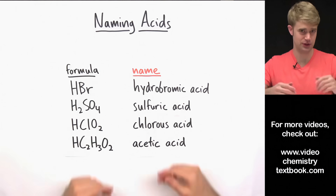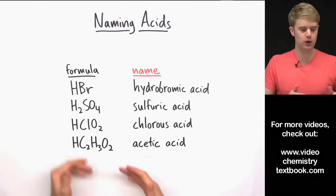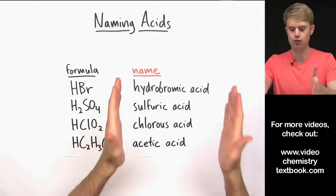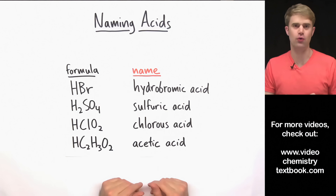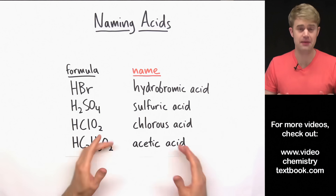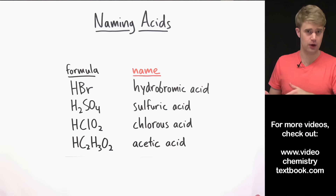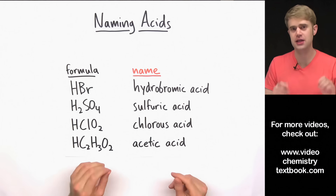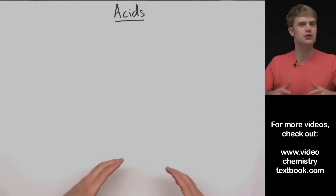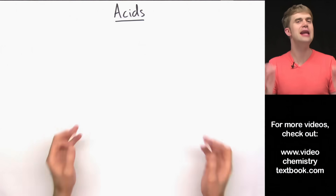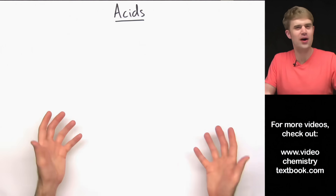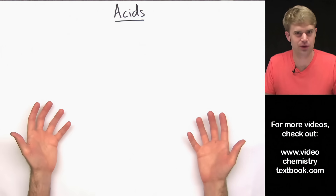Let's talk about naming acids. We'll learn how to look at the chemical formula for an acid and write a name for it. This video is going to be an introduction to the topic, and then the next video is going to be a lot of example problems so you can get some practice. So if we're going to be talking about naming acids, let's start out by asking: what's an acid in the first place?